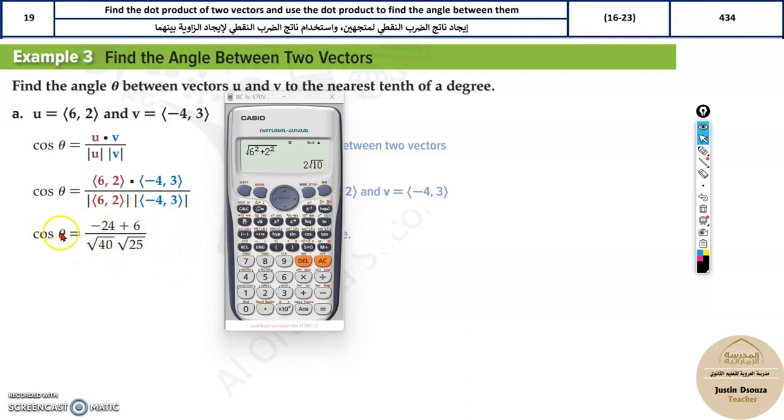Now before solving you need to find theta, that is the angle, not cos theta. So cos goes to the other side so it becomes cos inverse. Just remember the cos inverse of all these values.